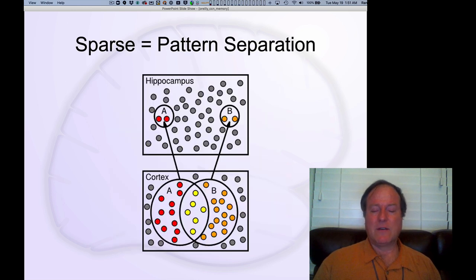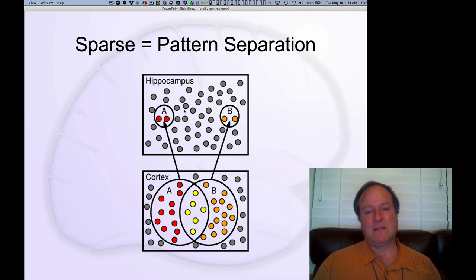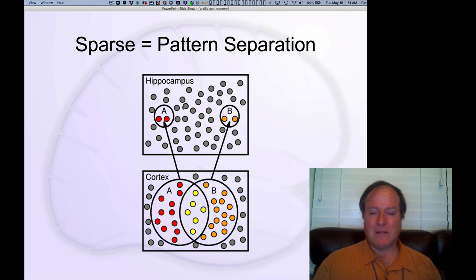Here's a diagram we've seen in the context of the cerebellum — the same principle that David Marr originally articulated: individual patterns of activity with fewer neurons active have a general mathematical tendency to have less overlap, and therefore achieve pattern separation just based on pure mathematical probabilities. If you have fewer active neurons, there's less chance of them firing together across different memories.